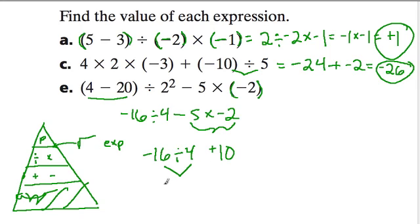This is next. Negative 16 divided by 4 is negative 4 plus 10. Altogether, it's positive 6.